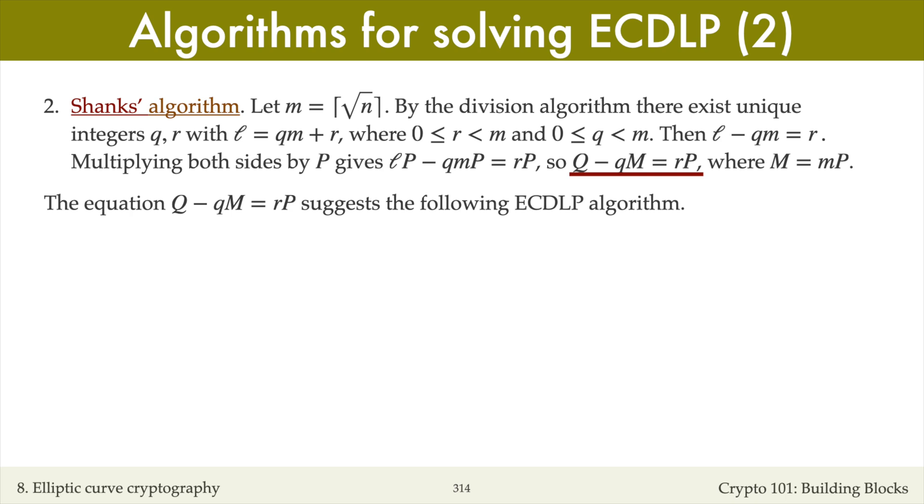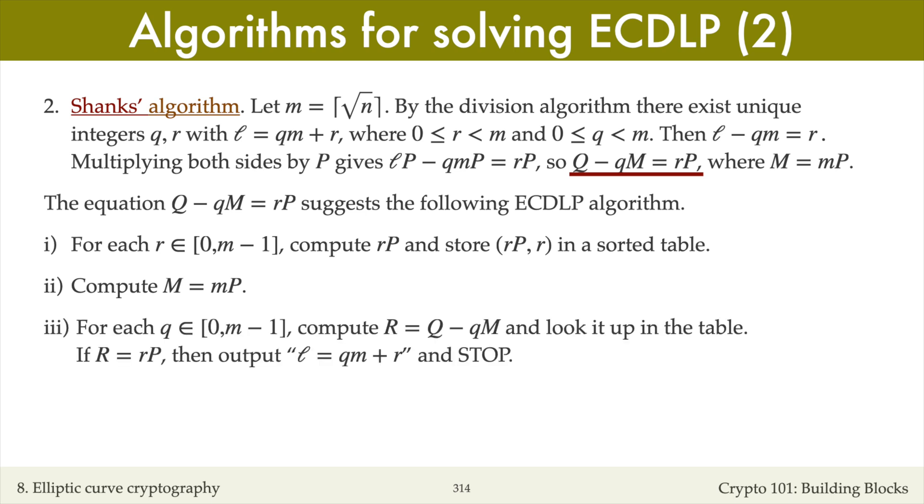Here are the steps of the algorithm. For each number r between 0 and m minus 1, we'll compute r times P and store the point rP and the integer r in a sorted table. We'll then compute the point M equals little m times P by using the elliptic curve analog of the repeated square and multiply algorithm for modular exponentiation. Next, for each integer q between 0 and m minus 1, we'll compute the point R by subtracting qM from Q and look up the point R in the table. If R equals rP for some r, then Q minus qM equals r times P, and so we can conclude that l equals qm plus r. Thus, we output l equals qm plus r and stop.